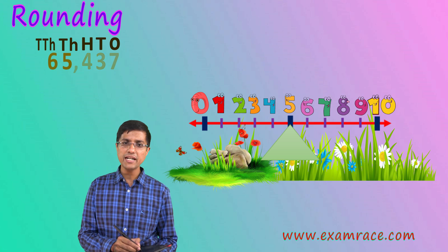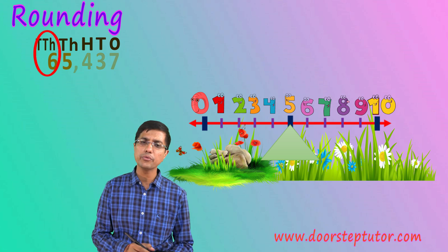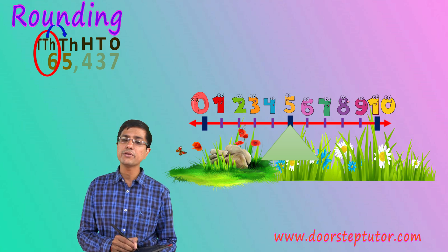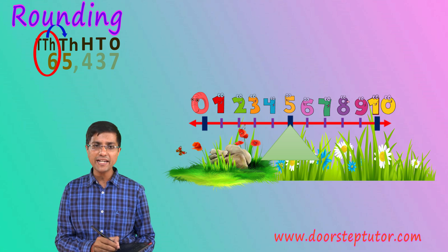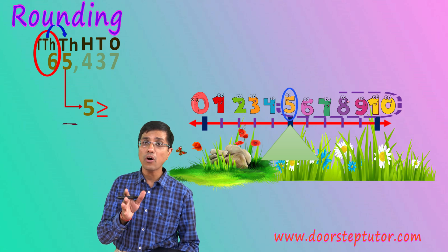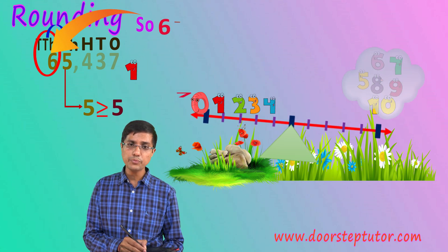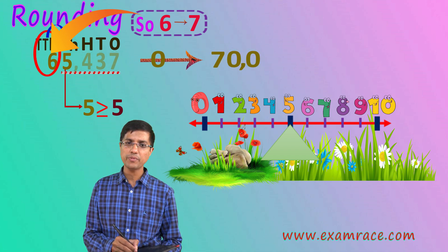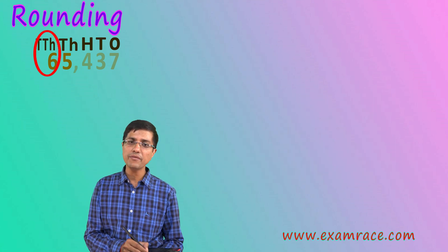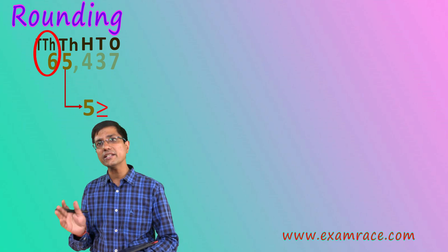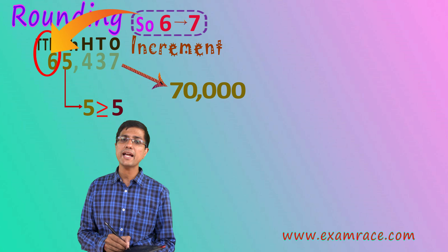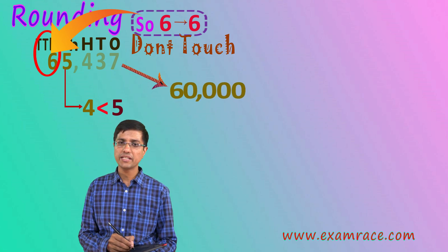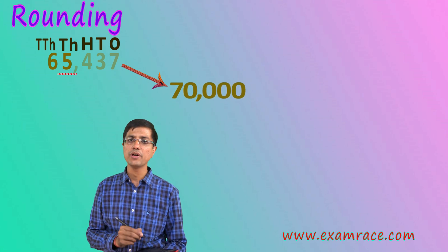Similarly, let's round 65437 to the nearest ten-thousands — I'm skipping thousands, which you can do yourself. I look at the ten-thousands digit and then the thousands digit, which is 5. Since the thousands digit is 5 or greater than 5, I increment the ten-thousands digit. So this 6 becomes a 7, the 5 becomes a 0, and everything below it becomes 0, giving 70000. If instead of 5 we had 4 there, the answer would have remained 60000. Anything 5 or above takes it to 70000.